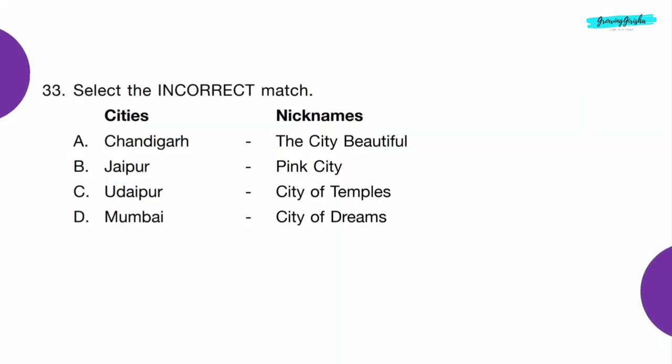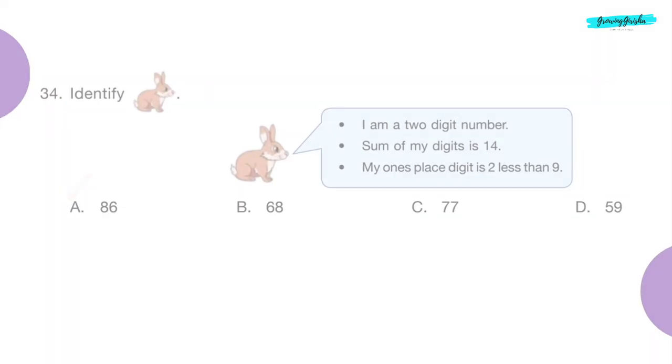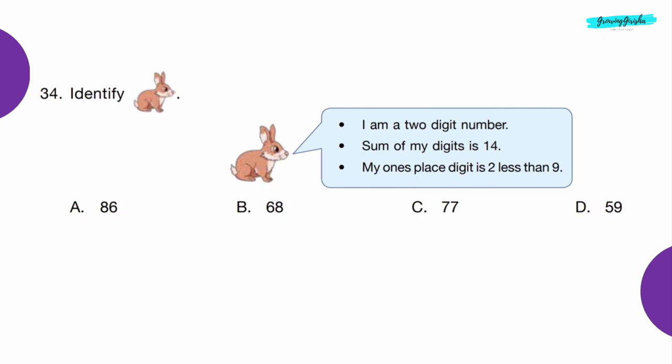Question 33: Select the incorrect match. Option C — Udaipur is the city of lakes, not of temples.